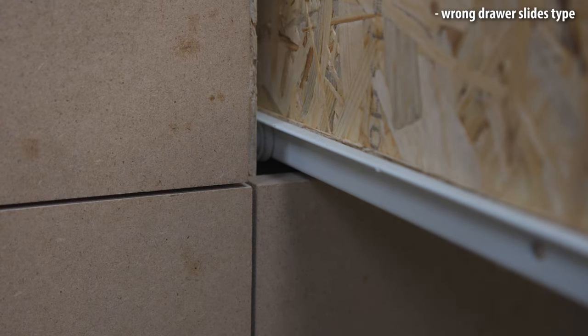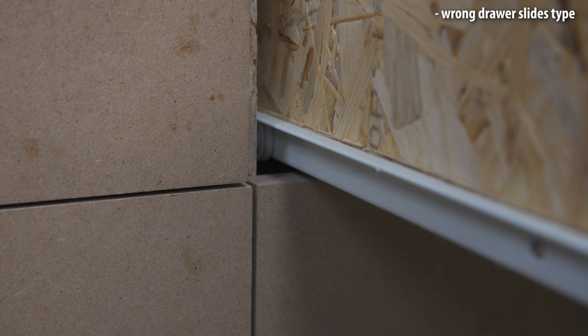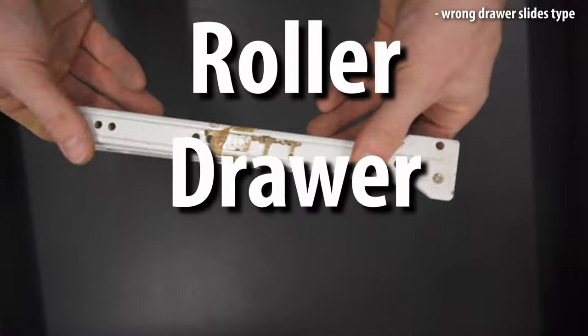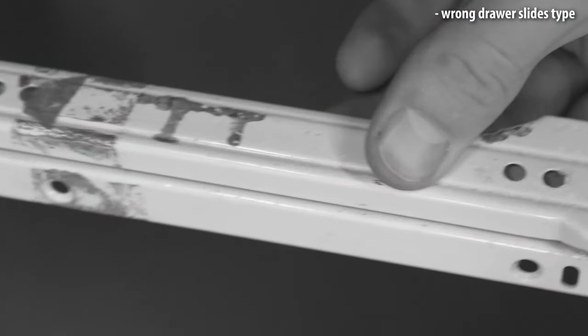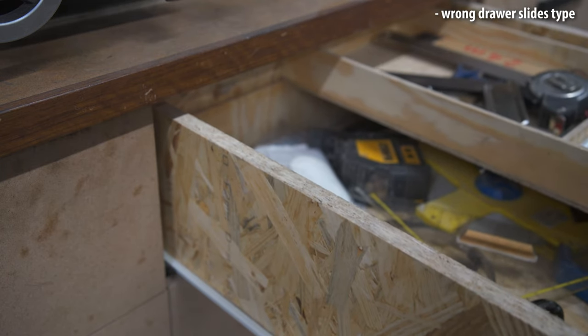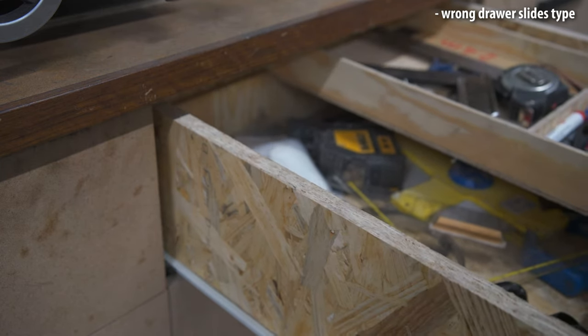On my first cabinet I was young and I needed the money, so I bought the cheapest drawer slides I could find: the roller drawer slides. Not only are these slides the cheapest, they are also prone to bending under heavy load and they are very unsmooth to operate.